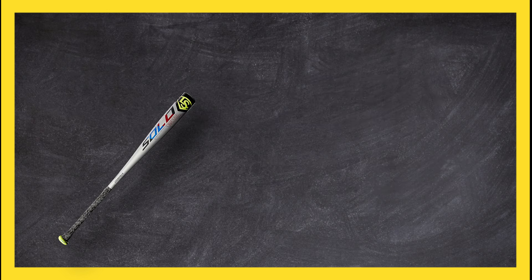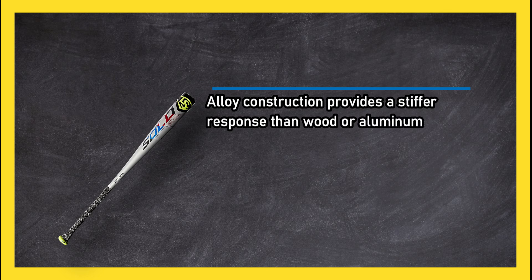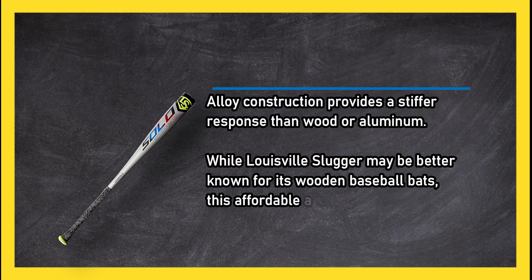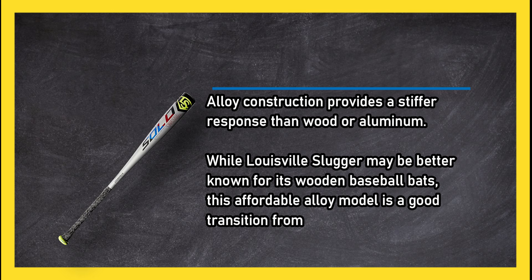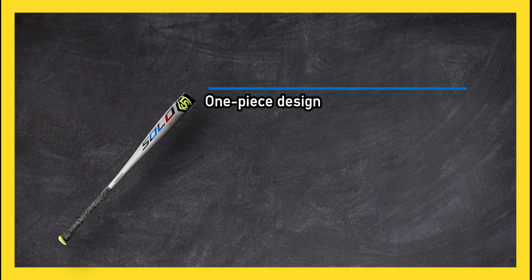Alloy construction provides a stiffer response than wood or aluminum. While Louisville Slugger may be better known for its wooden baseball bats, this affordable alloy model is a good transition from wood to metal in league play. One-piece design can cause significant vibration in hands. Some dents reported after minimal use.